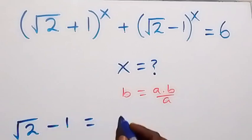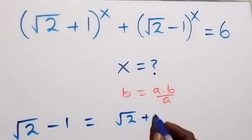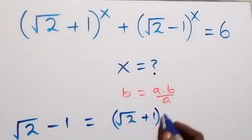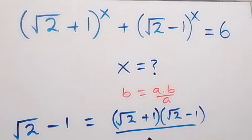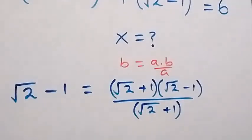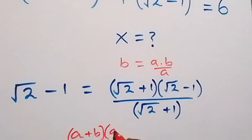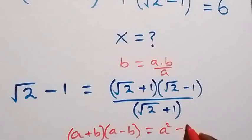Rather, we can write it as root 2 plus 1 times root 2 minus 1, then over root 2 plus 1. When this cancels out, we are still having root 2 minus 1. This follows from when we have a plus b multiplied by a minus b, which equals a squared minus b squared.